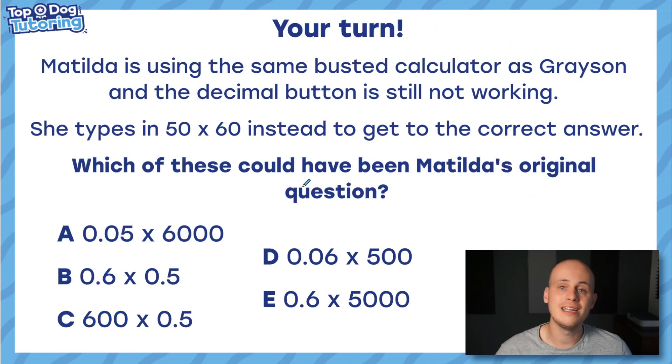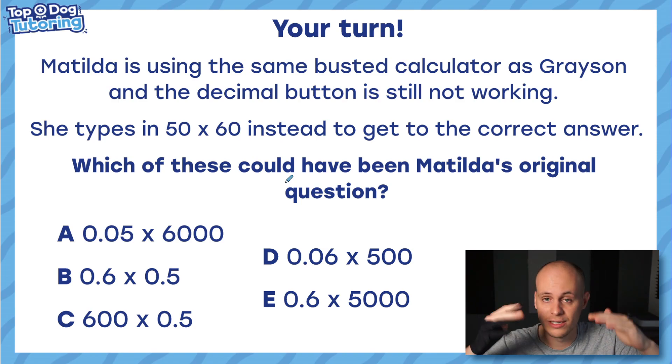I'm going to leave you with one now. Tune in tomorrow to see the answer to this question. I really want you to have a go. We've got Matilda here using that same broken calculator as Grayson—the decimal button's not working, so a very similar question. She types in 50 x 60 instead to get the correct answer. What could her original question have been? So it's kind of reverse on the last question that we just did together. Thank you so much for joining me. Do keep checking out the community tab and leaving us comments and likes as you go because we really appreciate all the support. You can see who is in the lead right now and who looks like they're going to be doing the forfeit at the end of this month. We're halfway through, we're just over halfway through, so plenty of time for us to catch up with each other and make this a real juicy competition. I'll see you in the next video. Have a great day!